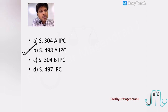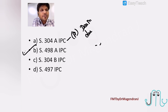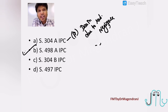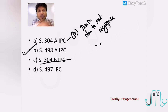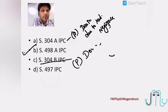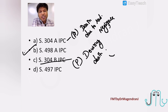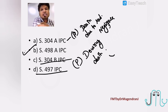Let us also see a few other sections. Section 304a gives punishment for death due to medical negligence — any death due to a rash or negligent act, punishable with two years imprisonment with or without fine. Section 304b gives punishment for dowry death. Section 497 IPC was the section giving punishment for adultery, but now Section 497 has been decriminalized — adultery is a ground only for civil charges and divorce, not a crime.